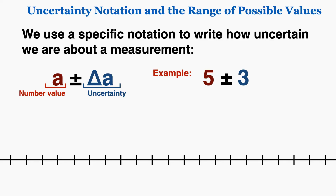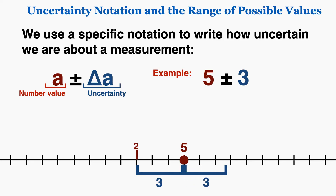Those variables represent the general notation, but we can also have specific notation where we write the exact numbers and uncertainties. For example, we could have a measurement that's 5 plus or minus 3. That means the measurement has the value 5, but we're uncertain about it, so it could be as low as 5 minus 3, which is 2, or as high as 5 plus 3, which is 8. So the true value could fall anywhere along this range of possible values from 2 to 8.